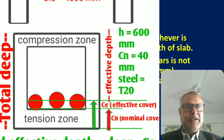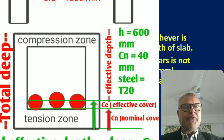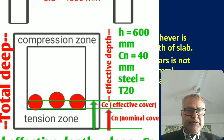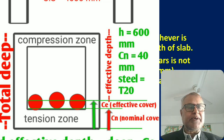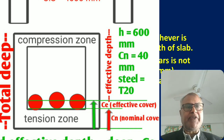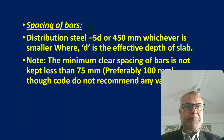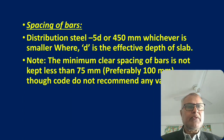Here D means effective depth. The effective depth of the slab is measured from the top of the slab to the centerline of the steel. For example, if your bar diameter is 12 mm, take the distance from the top to the center of the main bar at the bottom — that distance is the effective depth of the slab. Multiply the effective depth by 5 and compare with 450; take whichever is smaller.